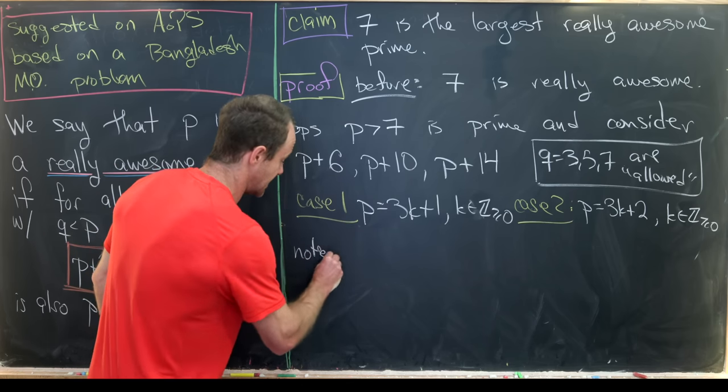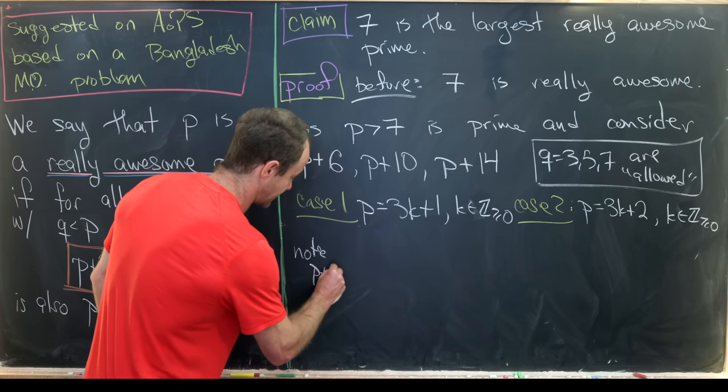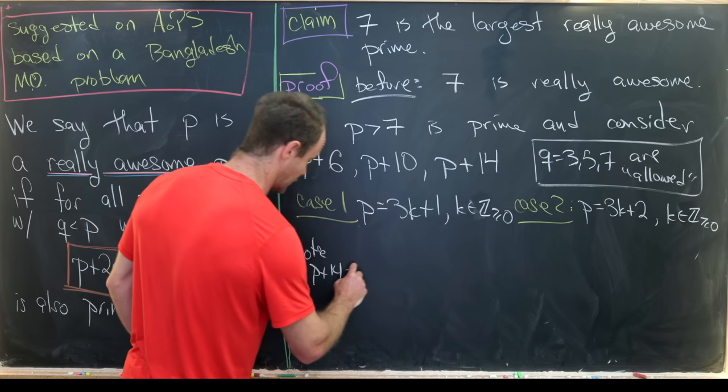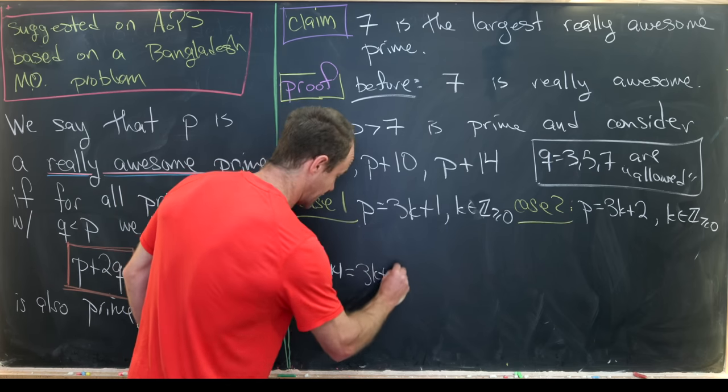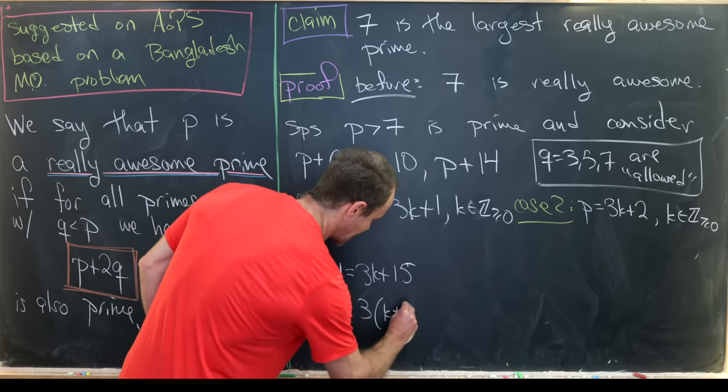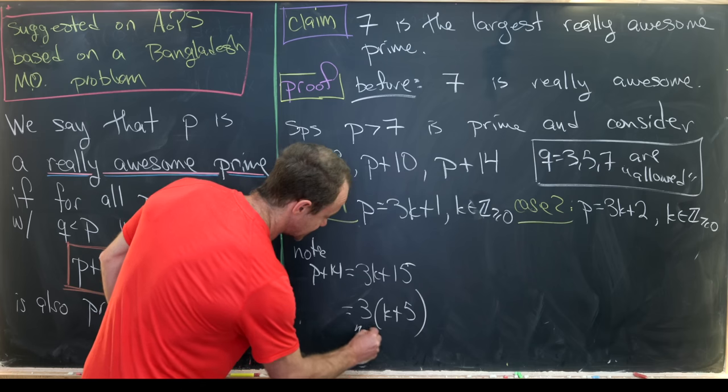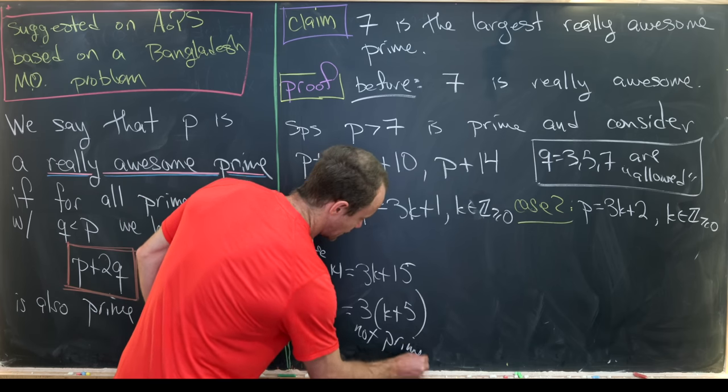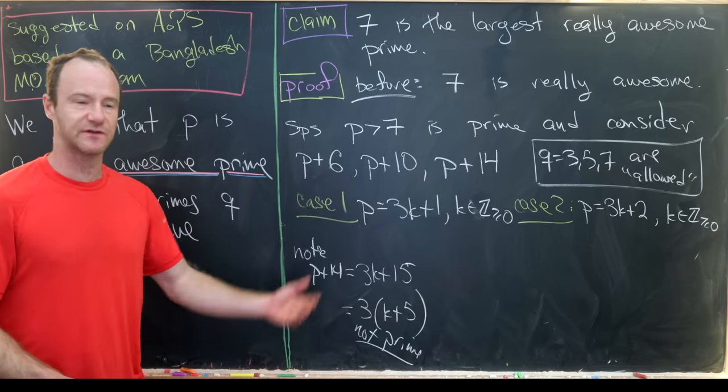So in particular, in this case, we'll note that p plus 14 is in fact equal to 3k plus 15, which is equal to 3 times (k plus 5), which is not prime. We know that's not prime because we just factored it.